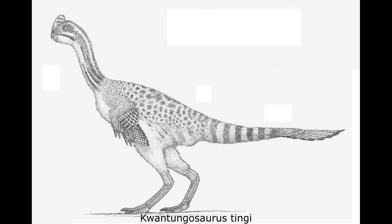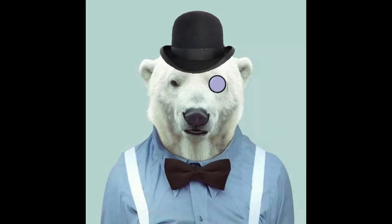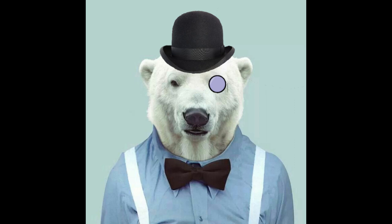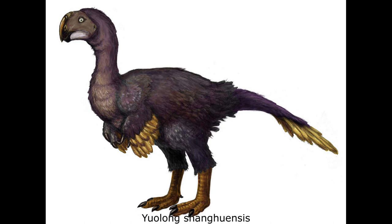One of these oviraptorids, Quantungosaurus ting-ai, is known from a fairly complete specimen, missing only some tail vertebrae and portions of the right hind limb and manual digits. Phylogenetic studies have placed Quantungosaurus as a member of a clade containing Banji, Wulate-long, and Ton-Tian-long. The other two genera are known from much poorer remains, but the fossils are diagnostic enough to demonstrate that one, Nanchongraptolentus, was a close relative of Heiuania, and the other, Yuolong shanghuensis, a direct descendant of Ganjaosaurus.